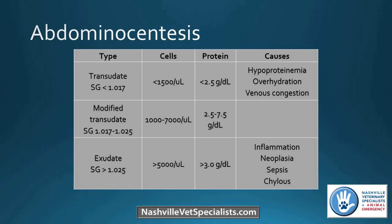Once you get fluid, analyze it to determine the cause. Look at cell types and protein levels. For septic abdomen, compare fluid blood glucose and lactate to patient values. For hemoabdomen, compare the PCV of the fluid to the patient's PCV. For uroabdomen, compare potassium and creatinine of the fluid to the patient. For bile peritonitis from a ruptured mucocele, compare the bilirubin of the fluid to the patient's bilirubin.